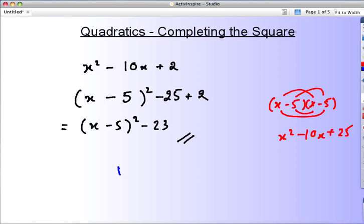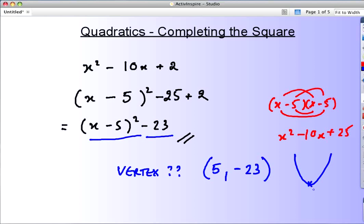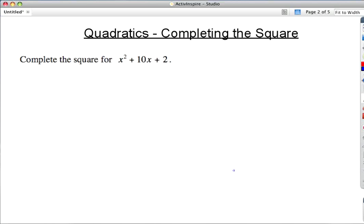Of course, the why - where's the vertex? When does the bracket become 0? At x equals 5. And when that happens, what will we have? Minus 23. That's the vertex of the quadratic. Good. Okay, let's have a look at one or two more.